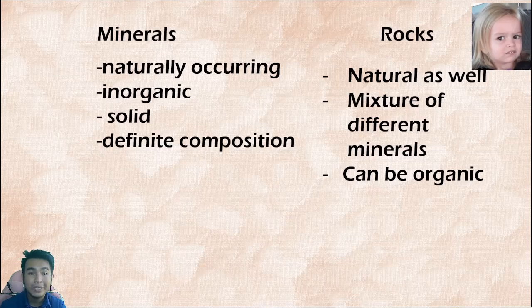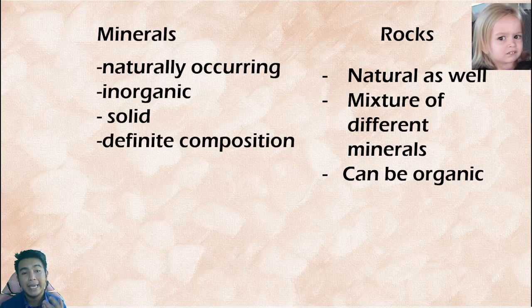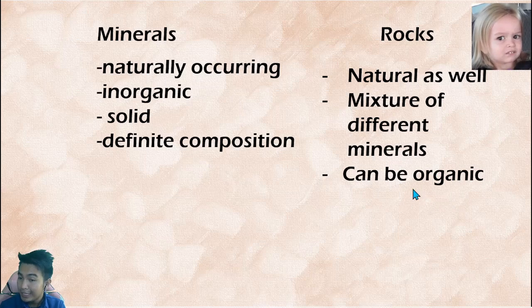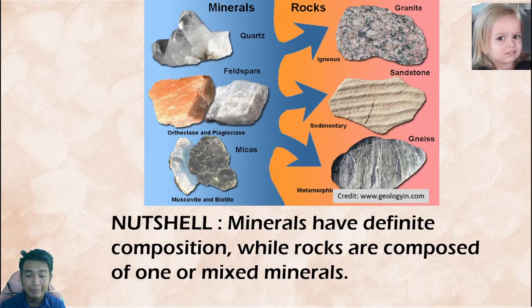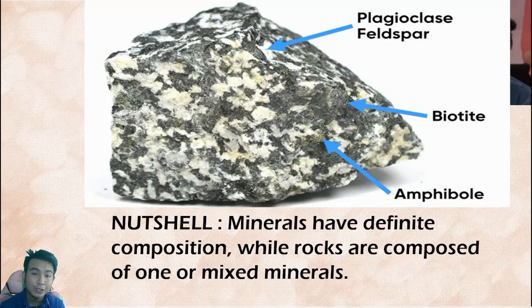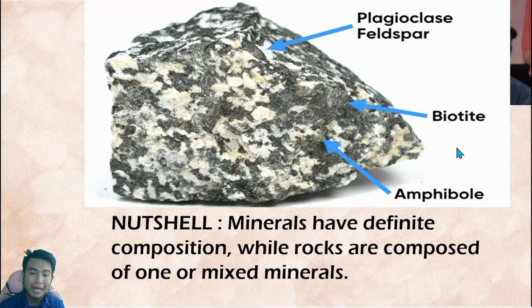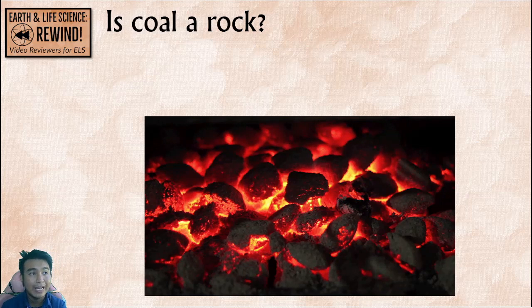How do we differentiate minerals from rocks? Minerals are solely inorganic, meaning not related to living organisms, while rocks can be organic. Another difference is that minerals have a definite chemical composition, while rocks are a mixture of minerals. We can say that minerals have definite composition while rocks are composed of mixed minerals. You can see that granite has three minerals in its texture: feldspar, biotite, and amphibole.